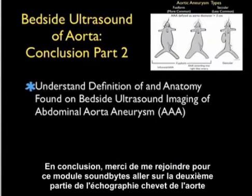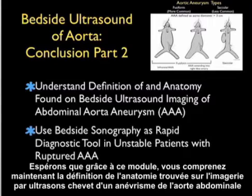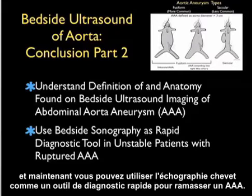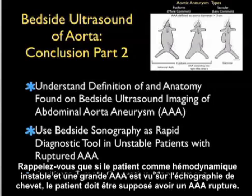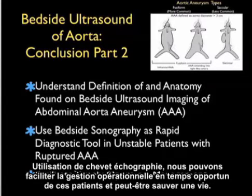In conclusion, thanks for joining me for the SoundBytes module going over part two of bedside ultrasound of the aorta. Hopefully through this module you now understand the definition and anatomy found on bedside ultrasound imaging of an abdominal aortic aneurysm. You can now use bedside sonography as a rapid diagnostic tool for picking up a AAA. Remember that if the patient has unstable hemodynamics and a large AAA is seen on bedside sonography, that patient must be assumed to have a rupturing AAA. Using bedside sonography, we can facilitate timely operative management of these patients and possibly save a life.